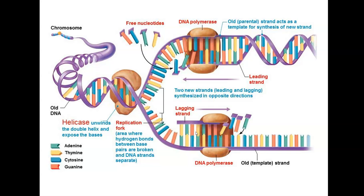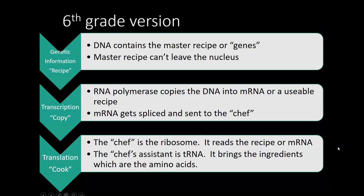Because of a quirk in chemistry, each DNA molecule runs in opposite directions, which means one of the strands can be built continuously from start to finish — that's the leading strand. The other strand has to be built in little fragments called Okazaki fragments, because we build a little bit, then have to stop and wait for it to unravel, then build again, so it just has to work in a different order.